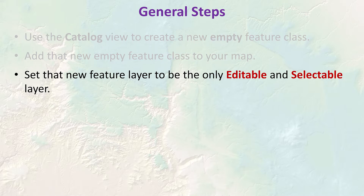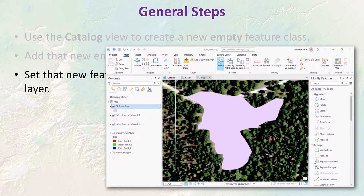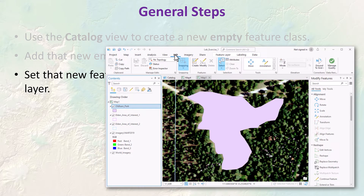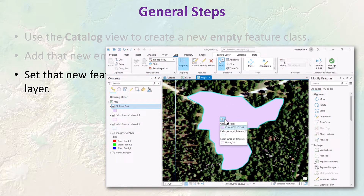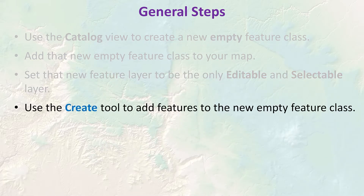Setting your current feature class as the only selectable one helps speed up your work when selecting things on the screen. It avoids a pop-up window that asks you which layer you want to select from. Then we use the create tool in the edit ribbon to add features to the new empty feature class.